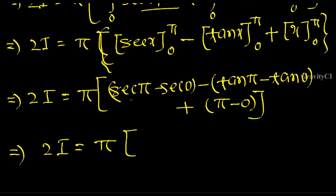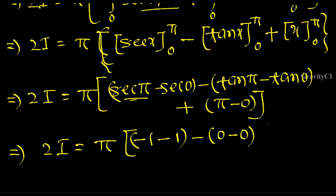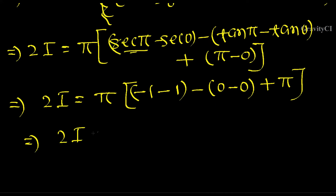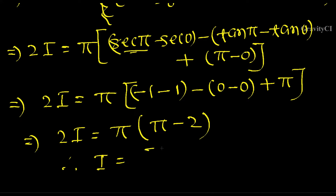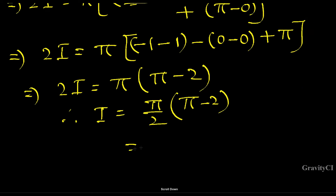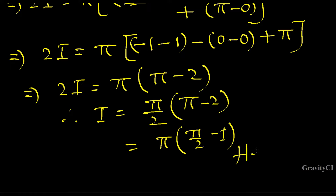So 2I equals π times (-1 - 1 - 0 + π) = π times (π - 2). Therefore I equals π/2 times (π - 2), which equals π(π/2 - 1). Hence proved.